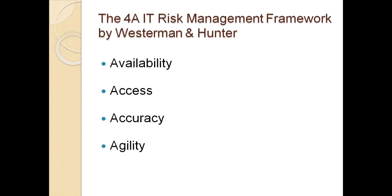The first A is Availability, which means keeping systems running and recovering from interruptions. The second is Access, meaning access to systems and data is provided to the right people and denied to the wrong people. The third is Accuracy, meaning systems have correct, timely, and complete information. And finally, Agility, which means the capability to change systems with managed cost and speed. The 4A framework notably adds the concept of Agility to the well-known information security concept of confidentiality, integrity, and availability.